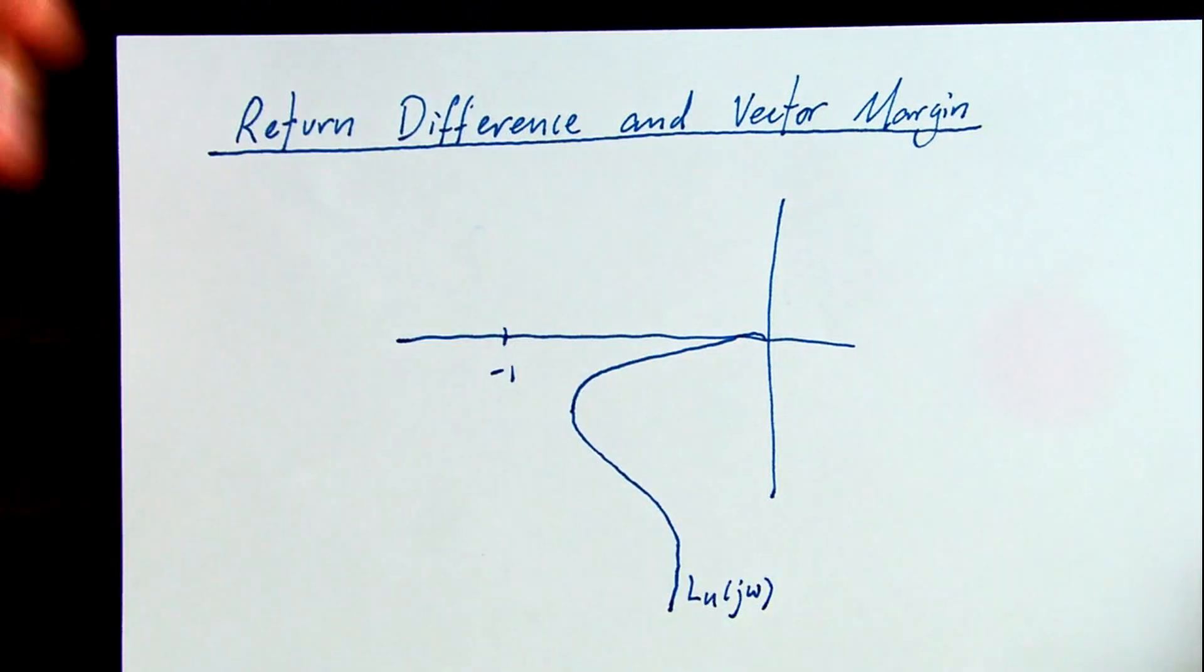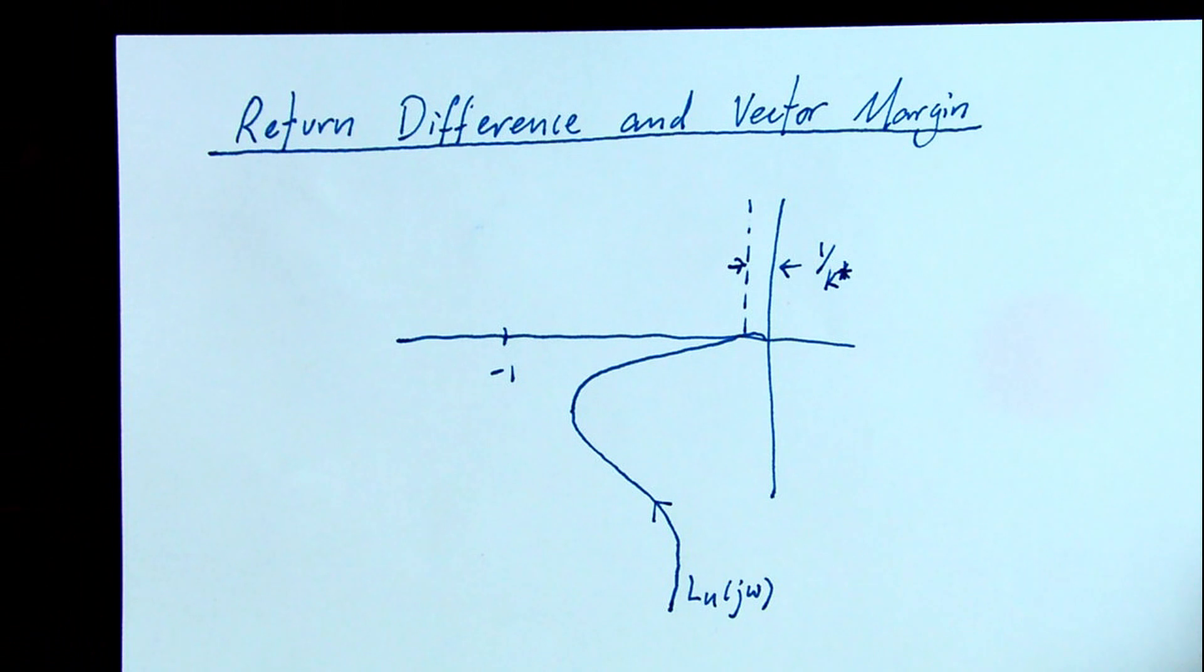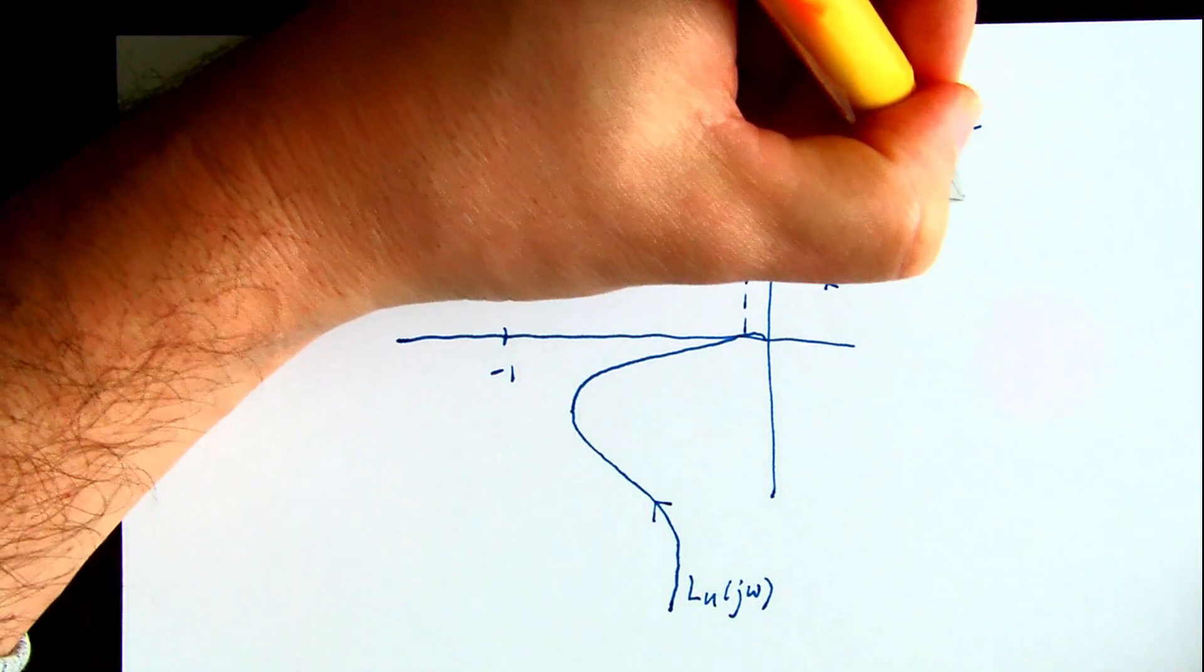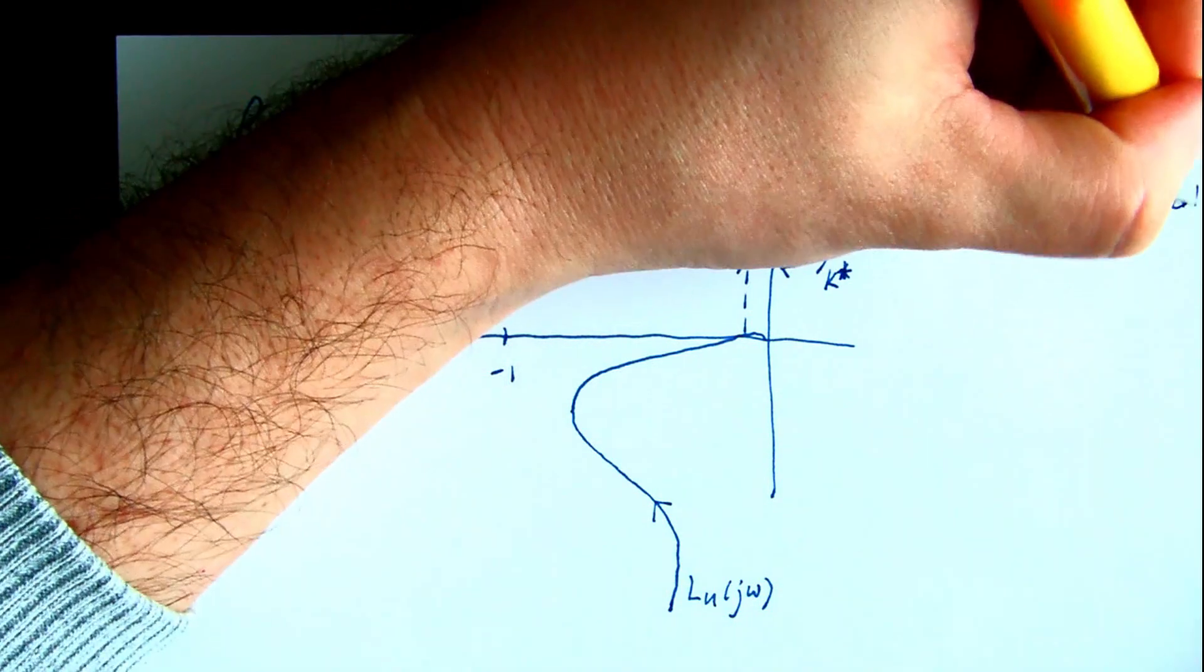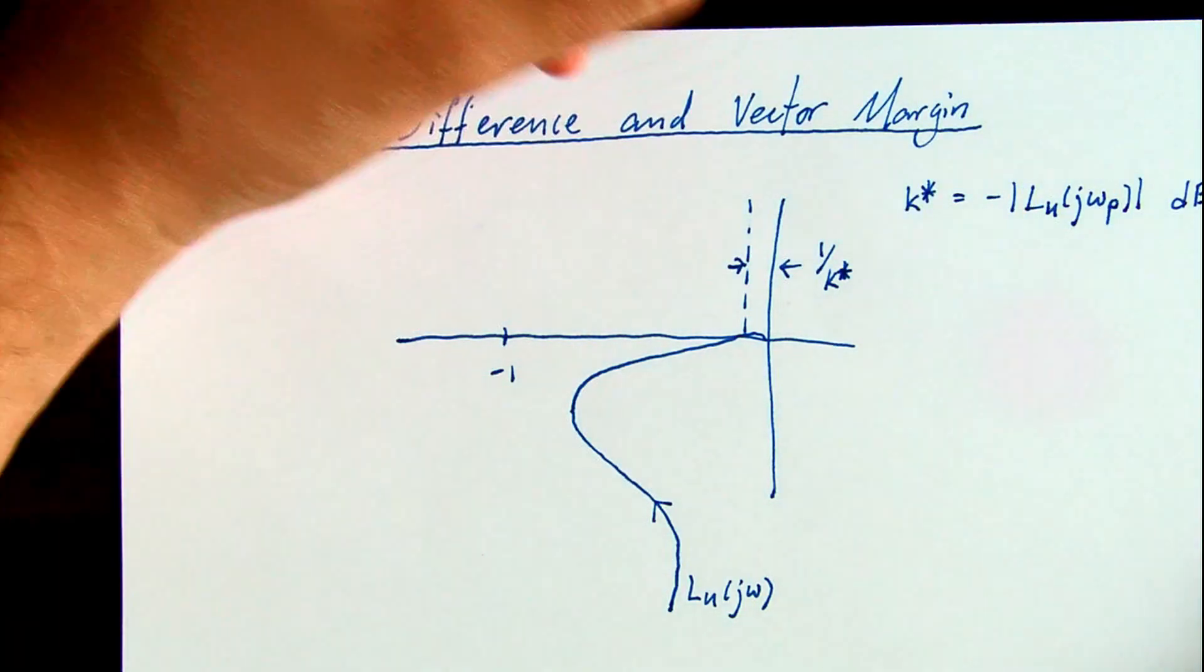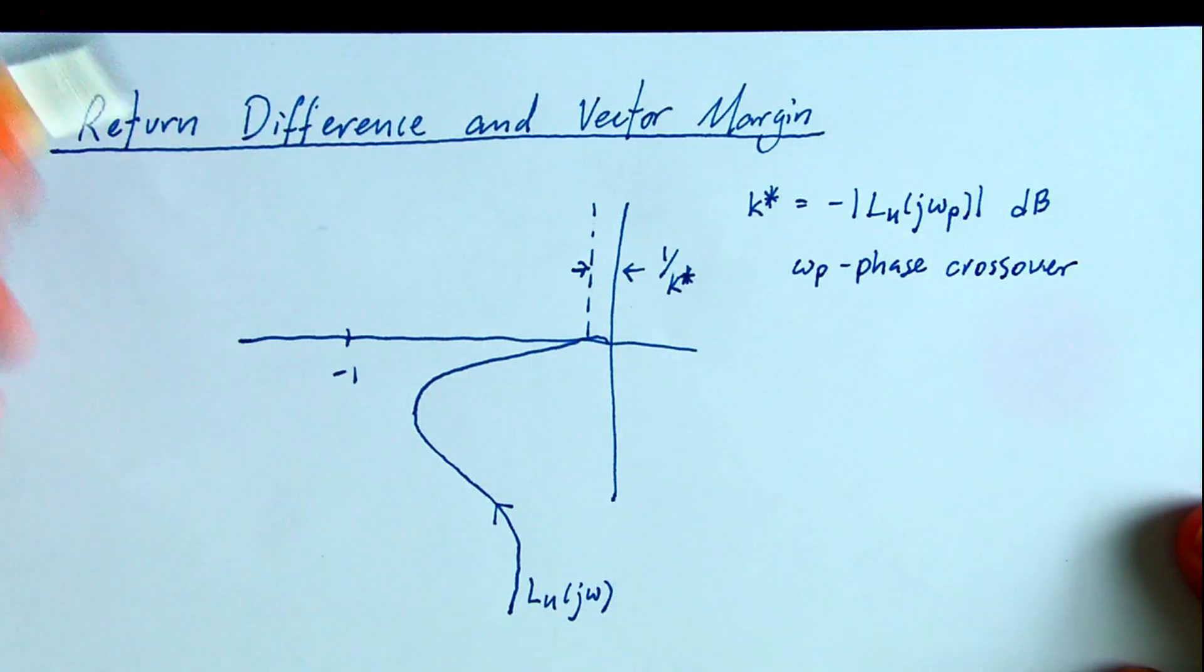Here's our loop gain from before. Gain margin is good and phase margin is also good for this loop gain, but there's a bulge that comes very close to the critical point and that nearness is missed by classical gain and phase margins.